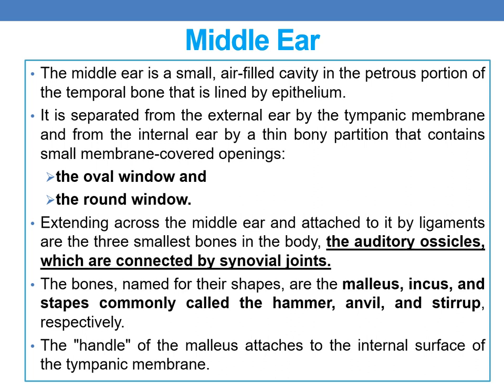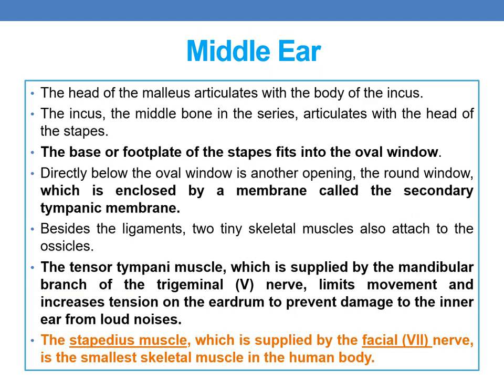The three auditory ossicles are named from their shapes: the malleus (hammer), incus (anvil), and stapes (stirrup). The handle of the malleus attaches to the internal surface of the tympanic membrane. The head of the malleus articulates with the incus, the middle bone, which in turn articulates with the head of the stapes. The base or footplate of the stapes fits into the oval window.